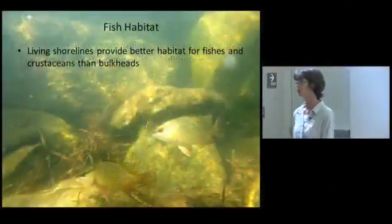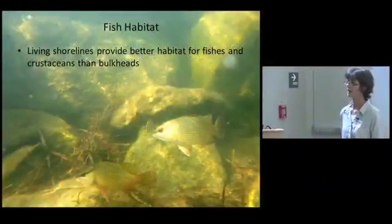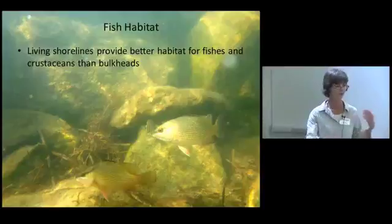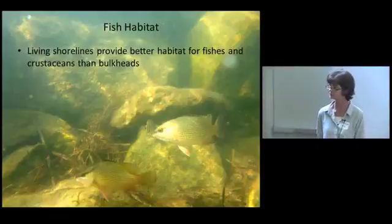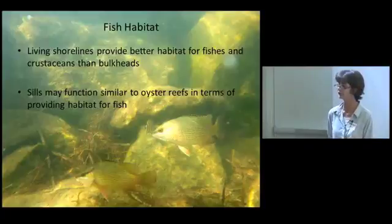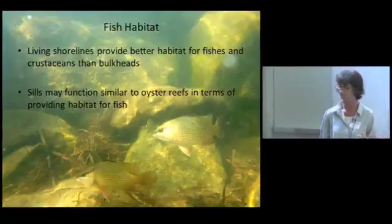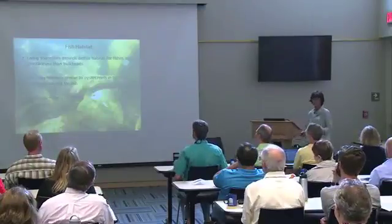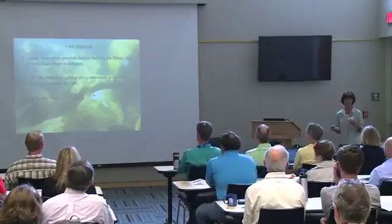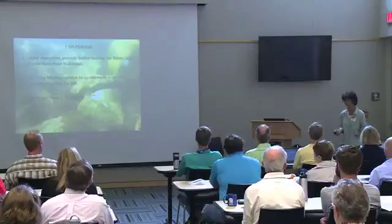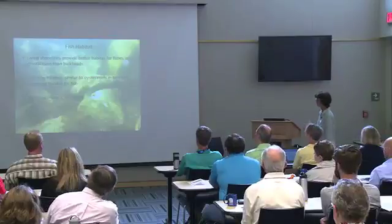Living shorelines provide much better habitat for fish and crustaceans than bulkheaded shorelines, as also demonstrated in Chesapeake Bay research for riprap revetments. Sills can function similarly to oyster reefs in providing fish habitat — granite and marl sills are often colonized by oysters, becoming part reef, part stone sill. It is important to have marsh planting behind the sill — the reef or sill alone without associated marsh community does not provide the same fish habitat value.